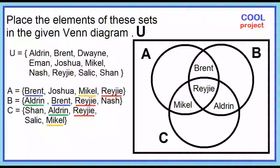Next, do we still have elements left in set A, set B, and set C? Yes. Joshua is in set A — place Joshua in circle A. Nash is in set B — place Nash in circle B. Sean and Salik go in circle C.